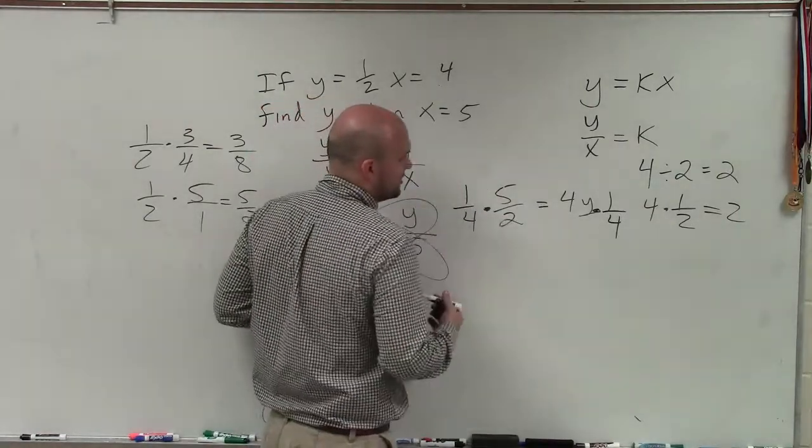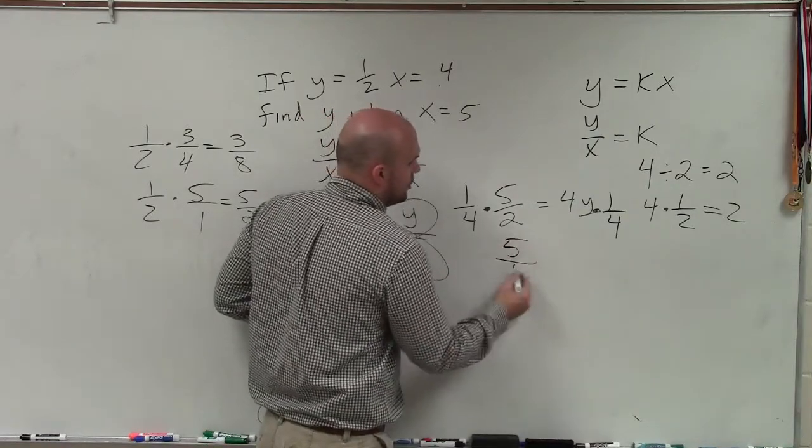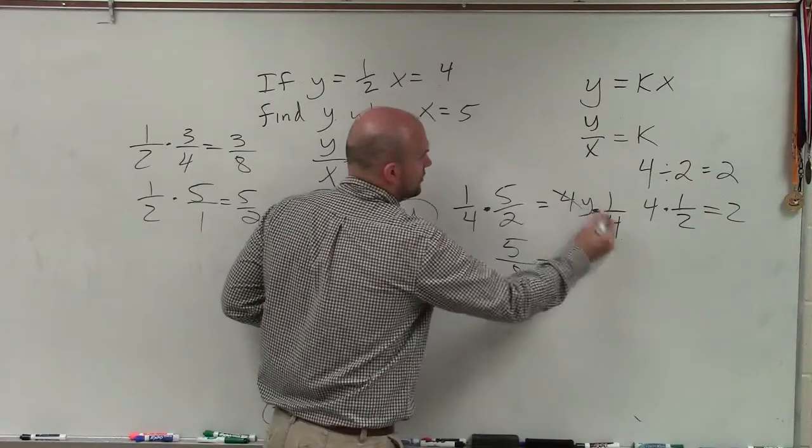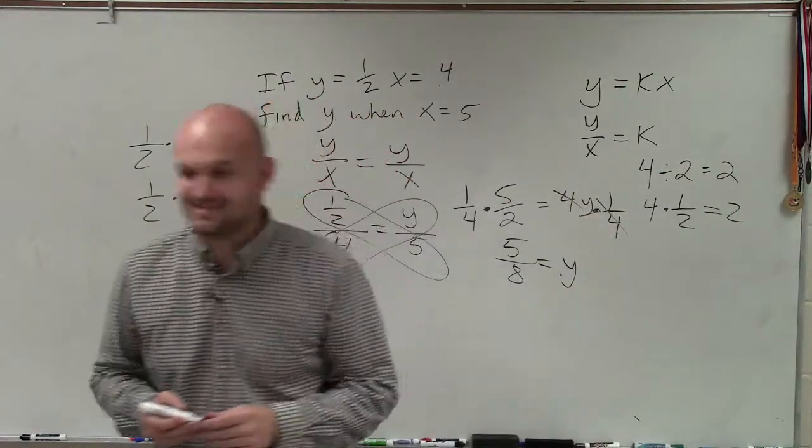So then I simply go ahead and multiply across. So I have 5 over 8 is equal to any whole number times its reciprocal is equal to 1. So I have 5 over 8 is equal to y. Thanks.